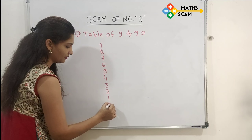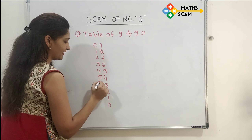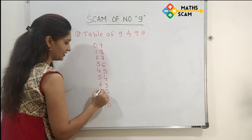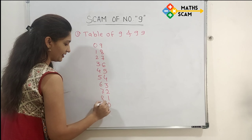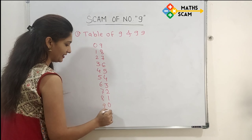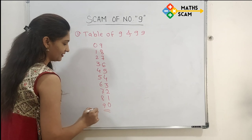And on the left side, write 0 to 9 in ascending order: 0, 1, 2, 3, 4, 5, 6, 7, 8, 9.